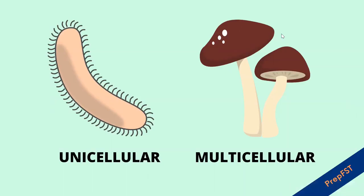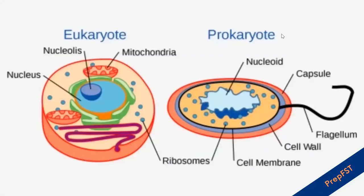Let's start from the very basics. We all know that unicellular organisms are made up of only one cell that carries out all the cell functions, whereas multicellular organisms are composed of more than one cell to perform specialized functions. We also know that prokaryotic cells lack internal cellular bodies or organelles and also a true nucleus, whereas eukaryotic cells possess all of them.